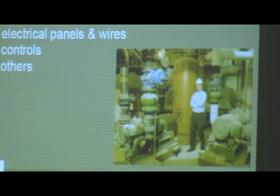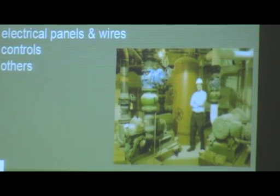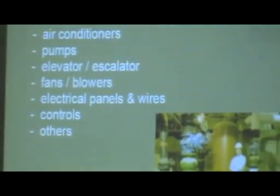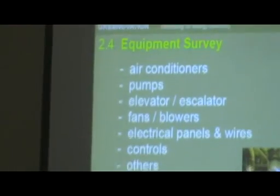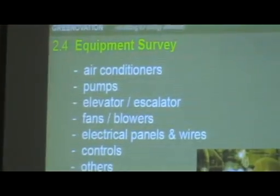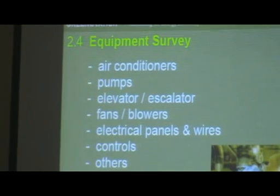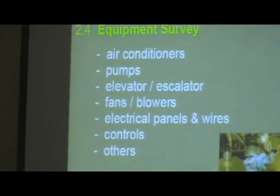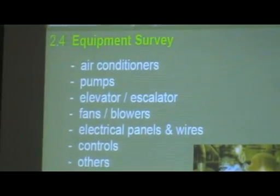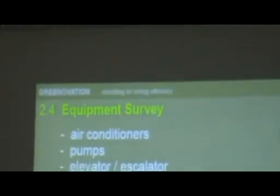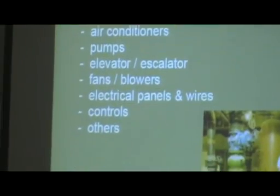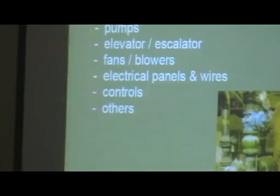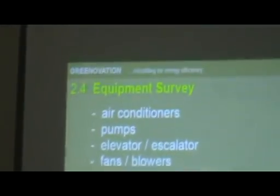Equipment survey: find out the condition of your aircons, pumps, elevators, fans, blowers, electrical panels, wires, controls, and others. Two things to check: first, the operational cost — how much electricity each piece of equipment is consuming. And second, the maintenance cost, because this will tell you if you're spending more than necessary trying to maintain a piece of equipment.